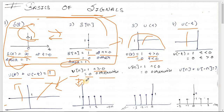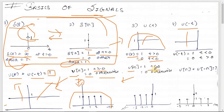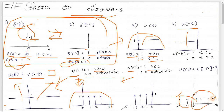The representation of u[n] shows 1 at n=0, 1, 2, 3, and so on. For u[-n], it equals 1 for n≤0 — note it is also 1 at n=0 — and the signal extends for n=-1, -2, and so on. When you add u[n] + u[-n], at n=0 both contribute 1, giving a value of 2 at n=0.